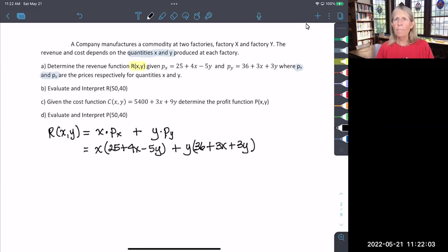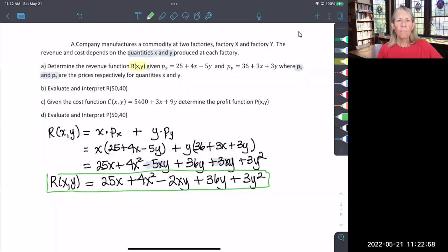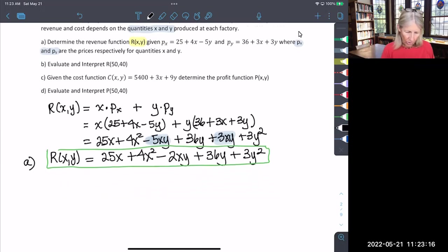Take a minute and do that. Okay, if you've distributed and combined like terms with the X's and Y's, you now have the revenue function. From there, you can do part B, which is to evaluate by plugging in 50 and 40 to get a value. Let's try that.